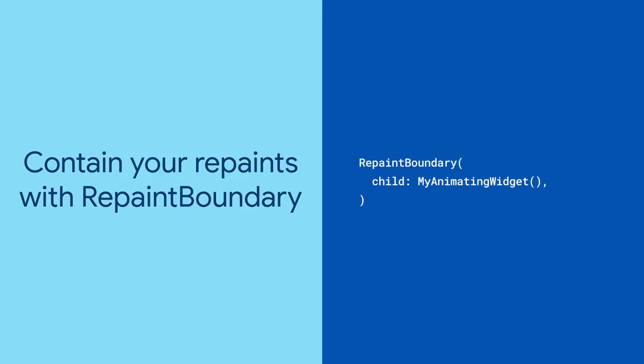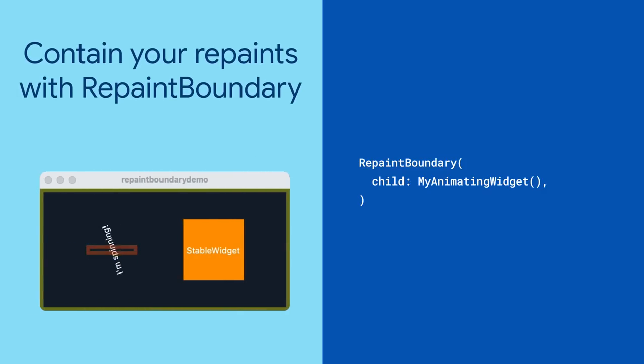Repaint boundary works by separating its child widget into its own layer, which makes it impossible to accidentally splash paint on neighboring widgets. Now run your app again and notice that, even though your animating widget keeps on animating, its neighbors no longer continuously repaint themselves.